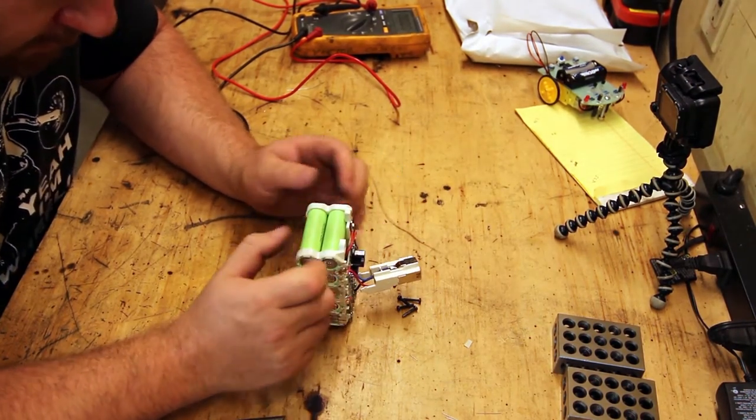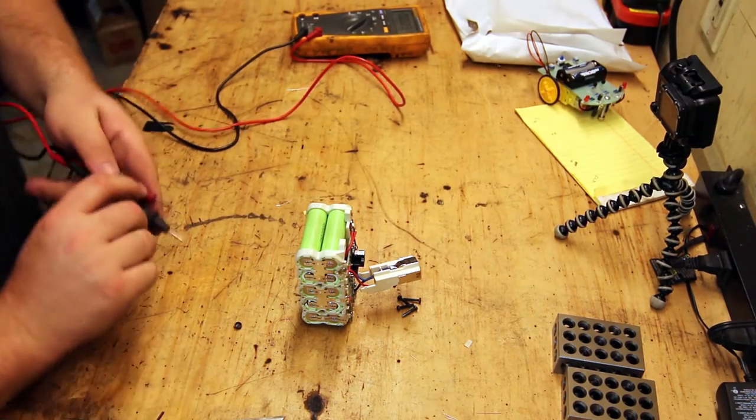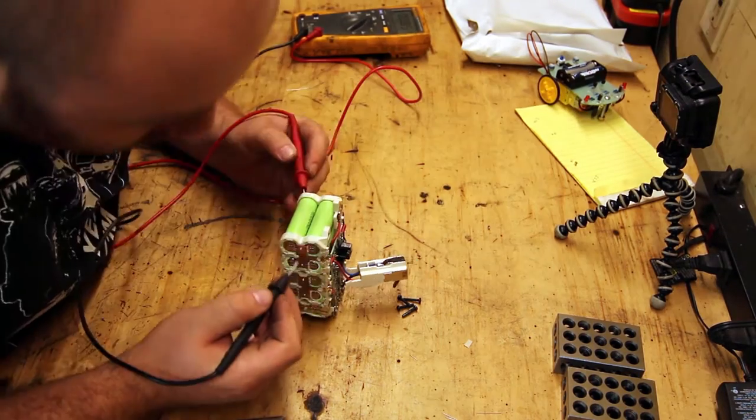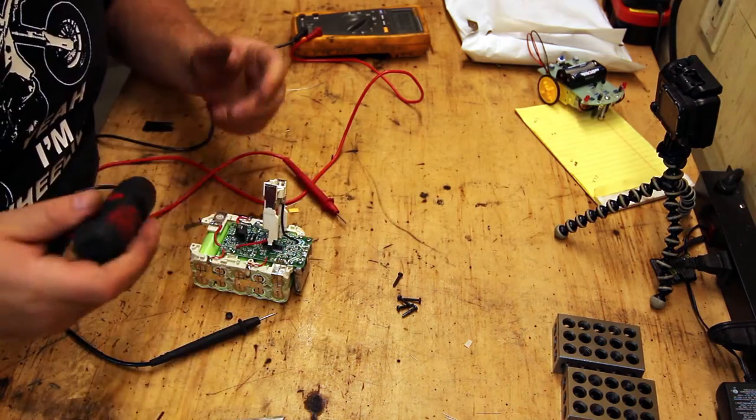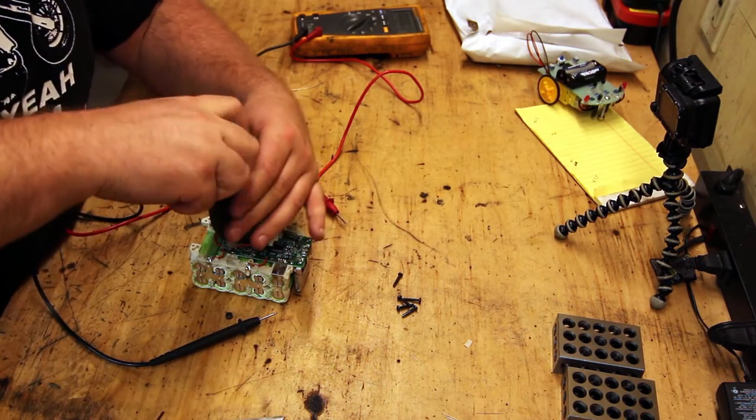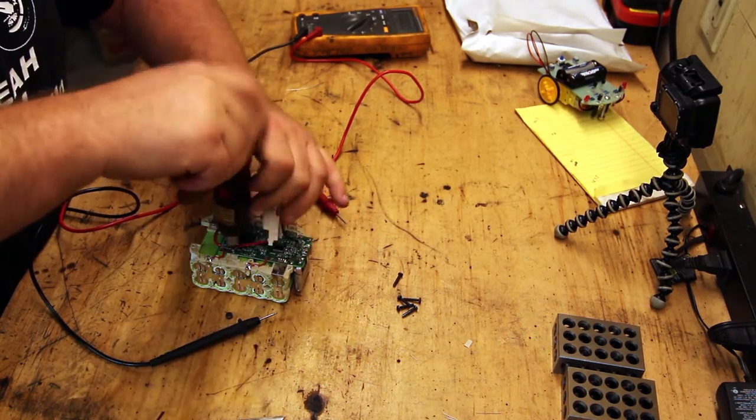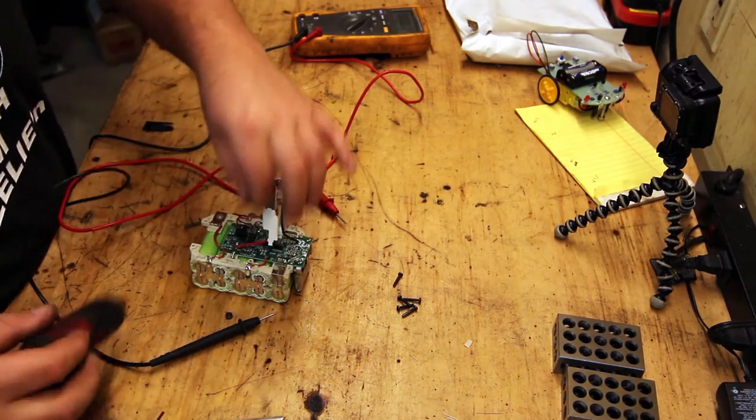So what we can do is we can go through and measure them individually and see if there's any that are kind of out of whack. 1.4 volts. Since we're not going to try to salvage this battery I'm going to go ahead and take this apart so that we can get these side pieces off.